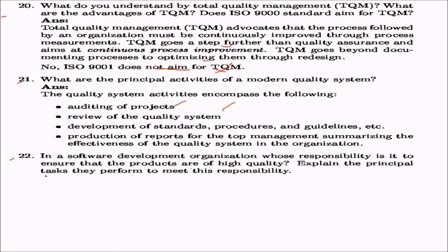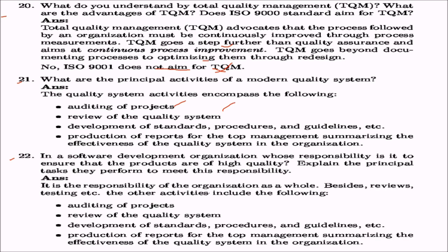In a software development organization, whose responsibility is it to ensure products are of high quality? This is the responsibility of the organization as a whole — no individual or single group can do it alone. Besides reviews and testing done by the development team, other activities include auditing, reviewing, development of standards and procedures, and production of reports for top management summarizing the effectiveness of the quality system.